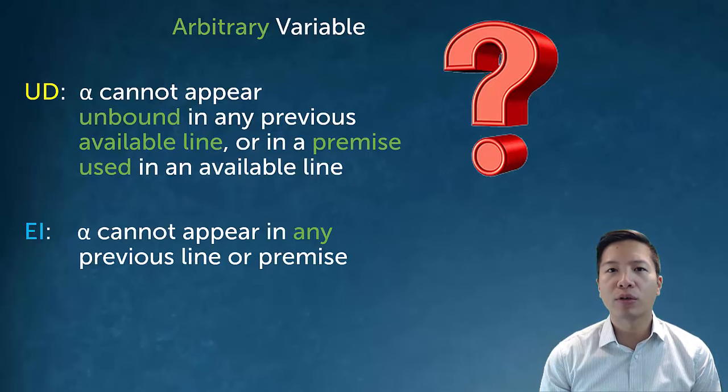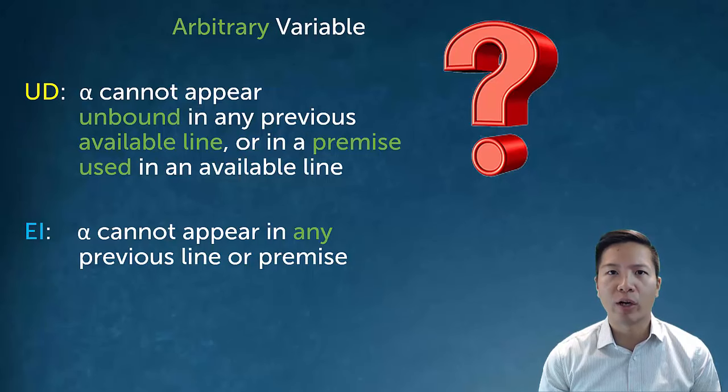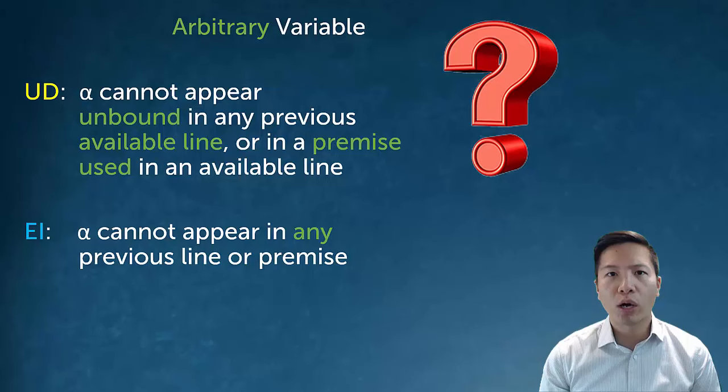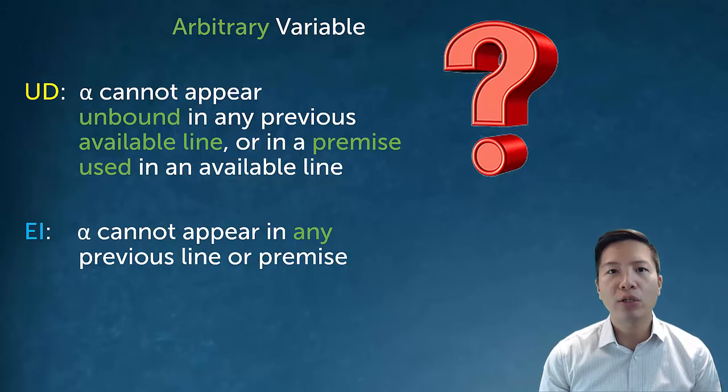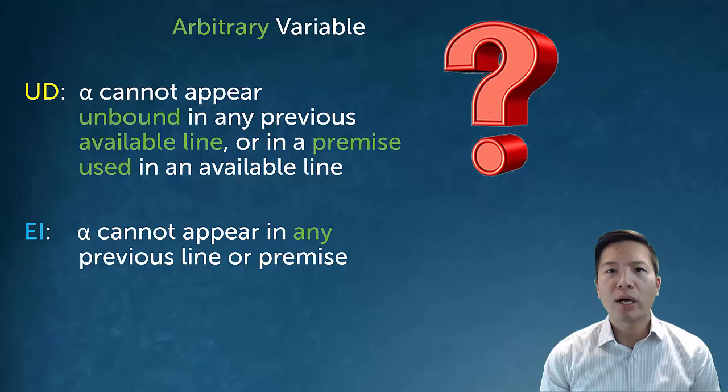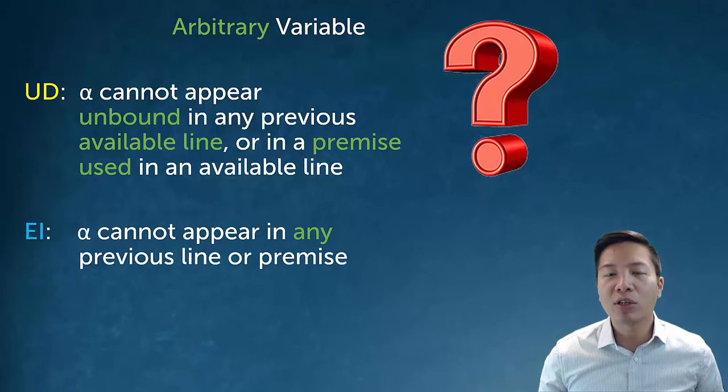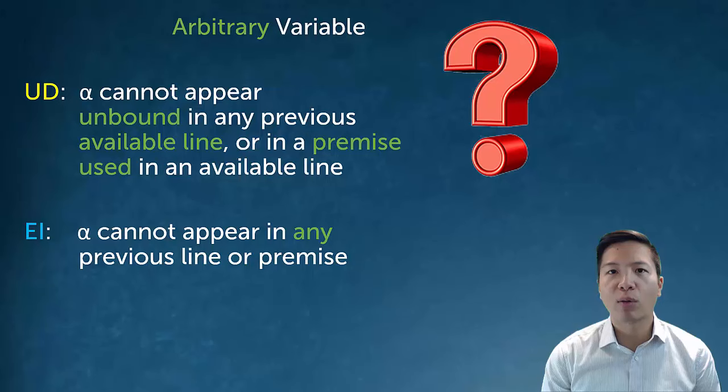You may have noticed that I've actually sort of contradicted myself in a weird way when it comes to the concept of an arbitrary variable. Arbitrary variables are of critical importance to universal derivation and existential instantiation. But we have different requirements for each of them. The restriction for an arbitrary variable for existential instantiation is way stronger, much, much stronger than that for universal derivation. In fact, it says it can't appear in any previous line or premise at all. Even if it's bound, you can't actually EI to it. And UD is much weaker and has these sort of odd restrictions to it that we just sort of explained in the previous section. So what is the right definition of arbitrary variable? Well, technically speaking, an arbitrary variable is just something we don't know anything about.